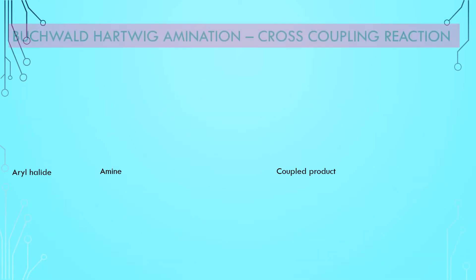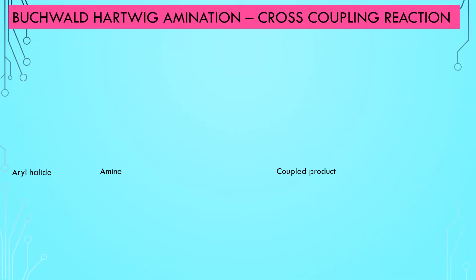We have learned about coupling reactions that involve C-C bond formation, achieved by both homo and heterocoupling. The twist in this reaction is that it is a coupling reaction but involves the formation of a C-N bond. The Buchwald-Hartwig coupling reaction is a very important reaction in organic chemistry for synthesis of the C-N bond — that is, a carbon-nitrogen bond — via the palladium catalyst.